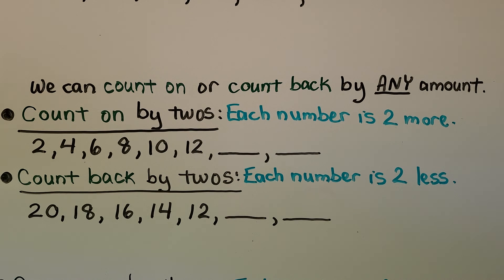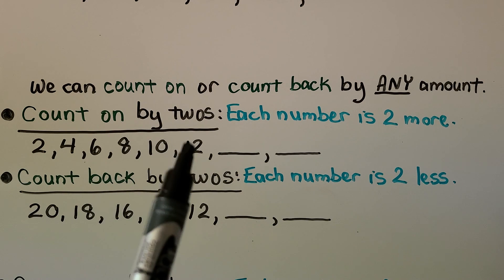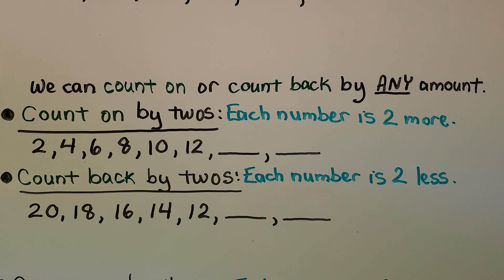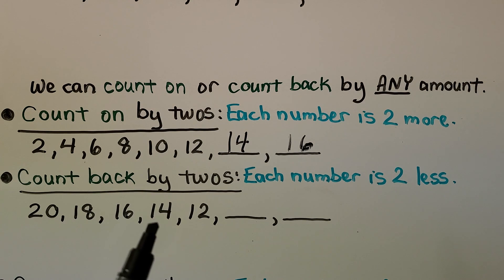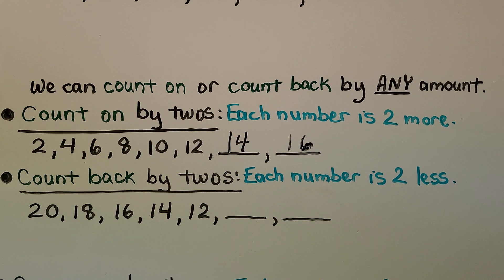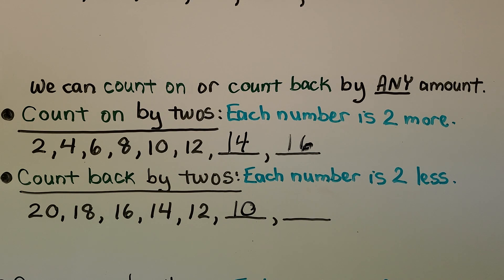We can count on or count back by any amount. We can count on by twos — each number is 2 more: 2, 4, 6, 8, 10, 12. Do you know what comes next? If you said 14, you're right. And the next missing number — if you said 16, you're right. We can also count back by twos — each number is 2 less. Starting at 20: 18, 16, 14, 12. If you said 10, you're right. And 2 less than 10 — if you said 8, you got it.